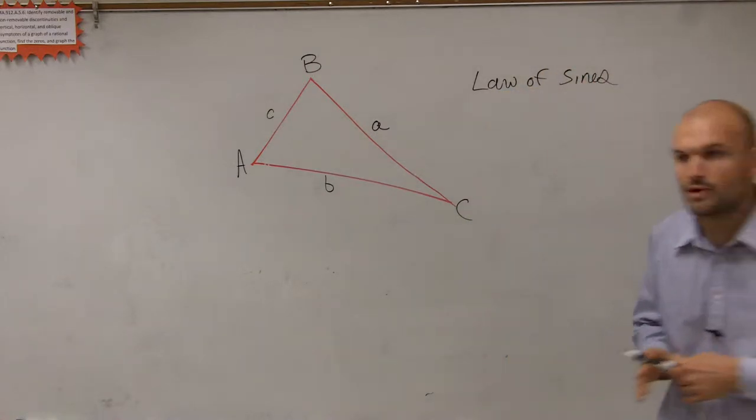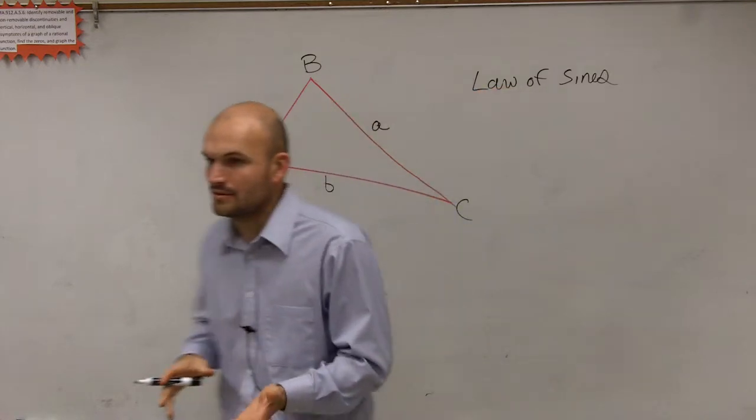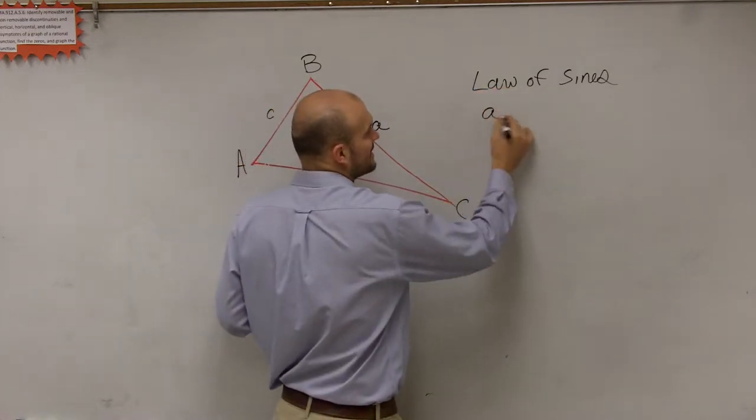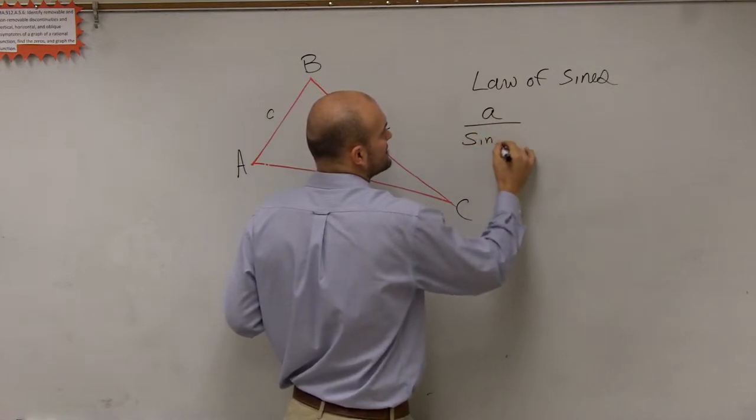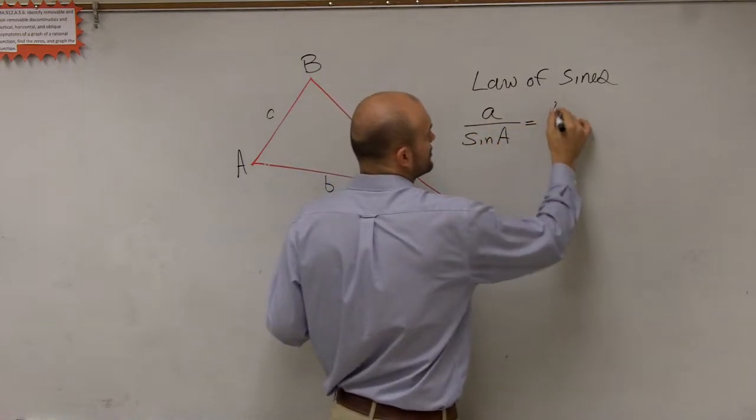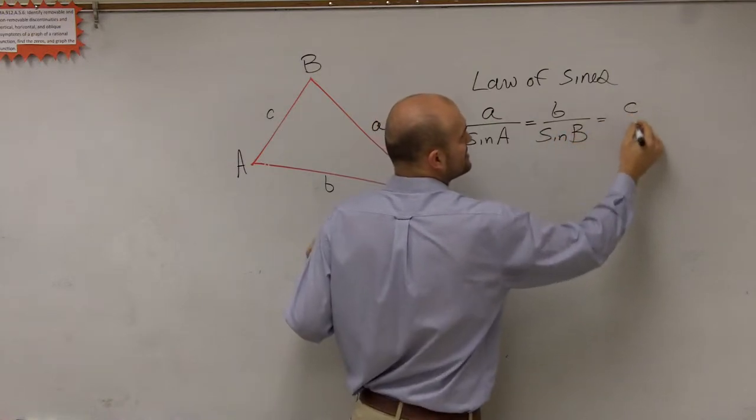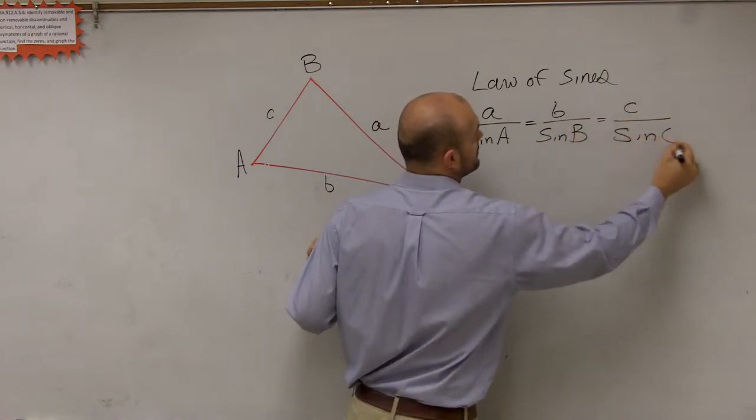So what you're going to want to do is write down these proportions. And what the Law of Sines states is a over sine of A is equal to b over sine of B, which is equal to c over sine of C.